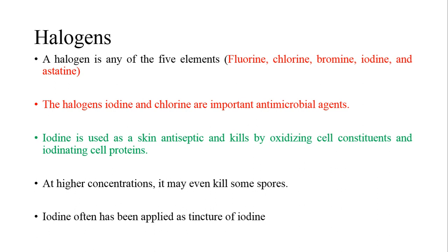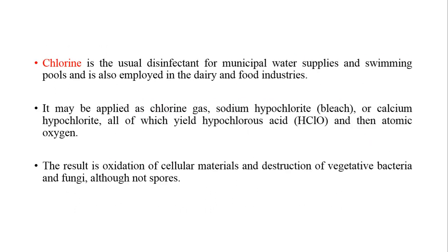Iodine and chlorine are two of the most widely used antimicrobial agents. Iodine is used as a skin antiseptic and kills microorganisms by oxidizing cell constituents and inhibiting cellular properties. At higher concentrations, it may even kill some spores. Iodine has often been applied as tincture of iodine, a household disinfectant used to clean wounds or injuries. Chlorine is also a very important halogen, mainly used for water treatment, treatment of municipal water supplies, and treatment of swimming pools.